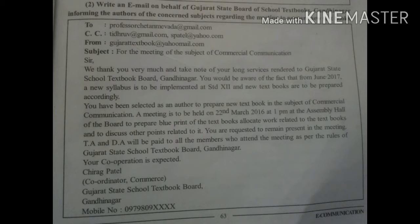If the receivers of the email are more than one, then their email addresses are written under CC, that is carbon copy. All receivers will come to know about one another. If the sender does not want to let others know to whom this mail is being sent, then their addresses are written under BCC — blind carbon copy.